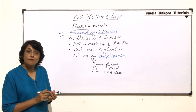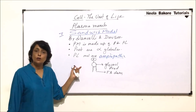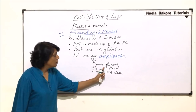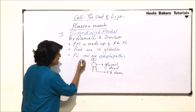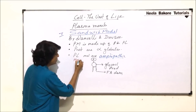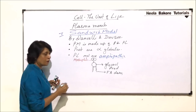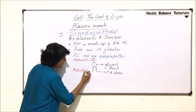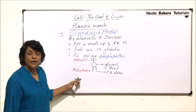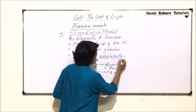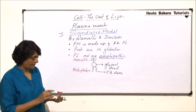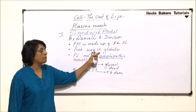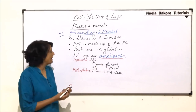What exactly is an amphipathic molecule? An amphipathic molecule is one in which one end is hydrophilic and the other end is hydrophobic. Due to the glycerol and phosphate, the head part becomes hydrophilic, whereas the fatty acid chains are hydrophobic. So one end is hydrophilic and the other end is hydrophobic — such a molecule is called an amphipathic molecule. Danielli and Davson told us that proteins are globular and phospholipids are amphipathic.